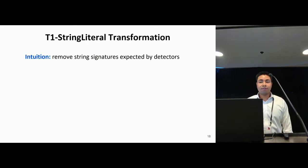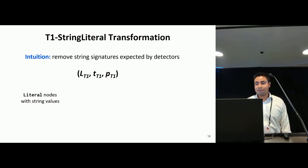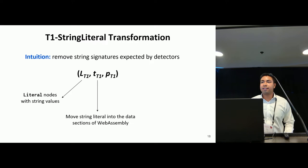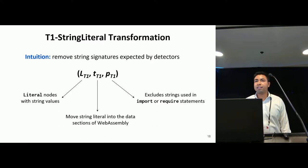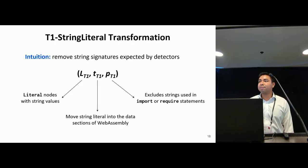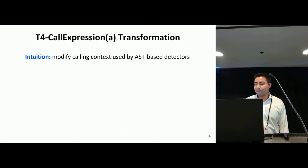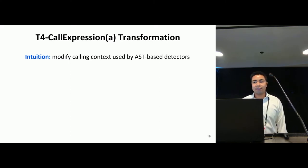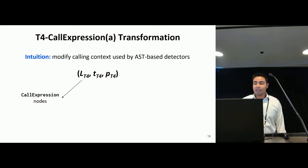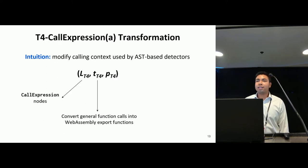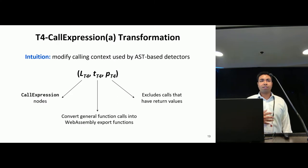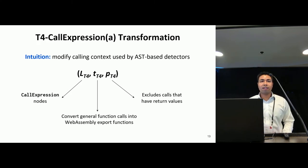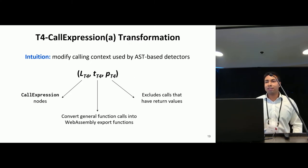Transformation rule T1 aims to remove the signatures expected by embedded code detectors. This rule targets literal AST nodes with string values, and the transformation moves string literals into the data sections of WebAssembly. The precondition excludes locations where function calls can't replace string literals, namely in import and require statements. Transformation rule T4 call expression A aims to modify the calling context used by AST-based detectors. Applied to call expression nodes, it works by converting the original JavaScript function call into a WebAssembly export call. This rule excludes calls that have return values, because supporting arbitrary data values would require representing all possible JavaScript data types using only the four primitives of WebAssembly, which is non-trivial.